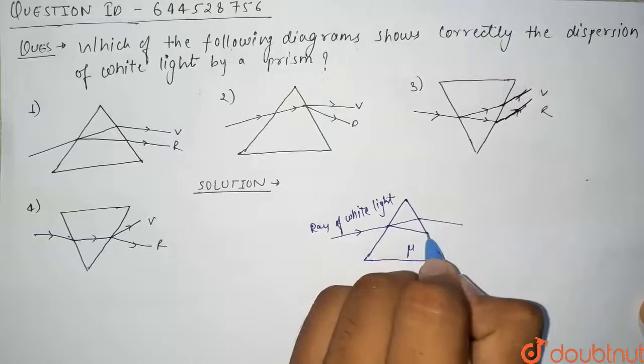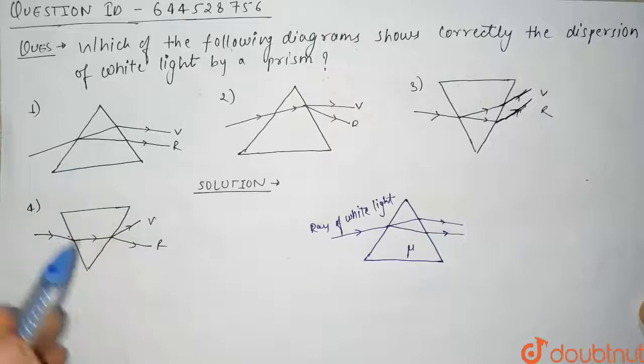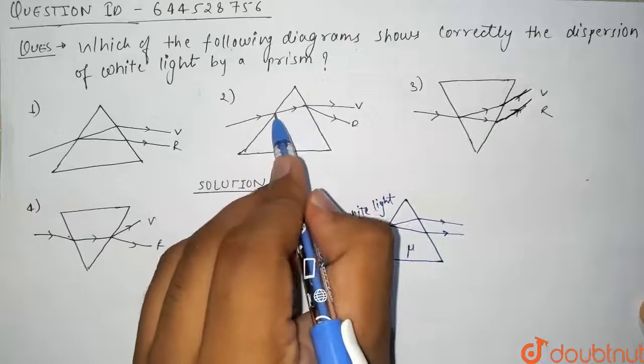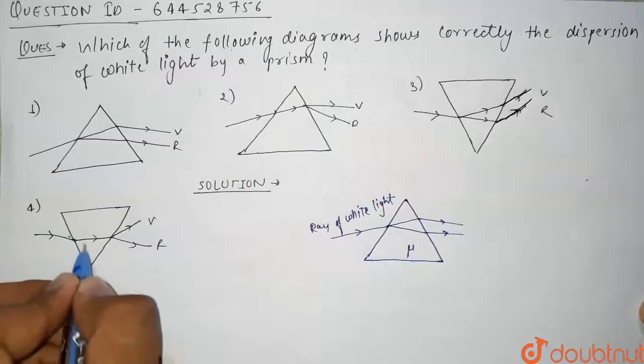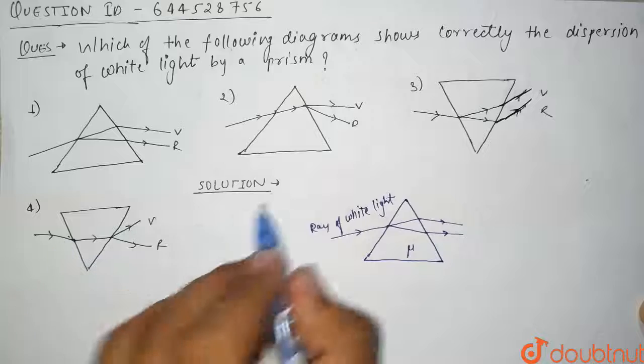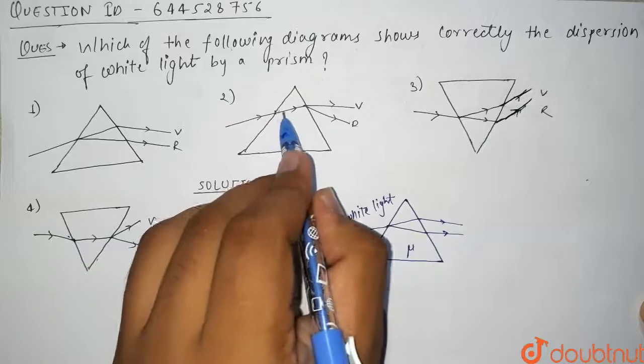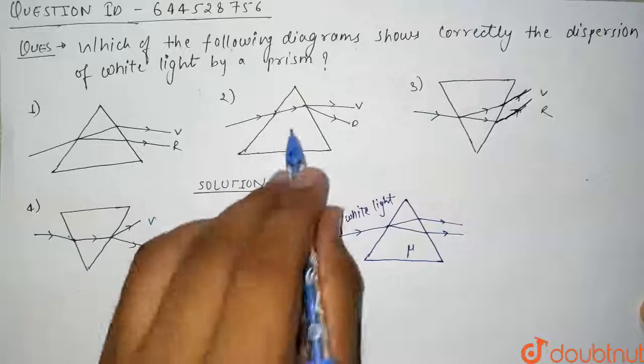From here we can clearly see that since in diagram 2 and in diagram 4 there is no dispersion from this surface, because the value of μ will be different for different colors of light, so there should be dispersion from this surface onwards. But in 2 or 4 there is no dispersion, so 2 and 4 are incorrect.